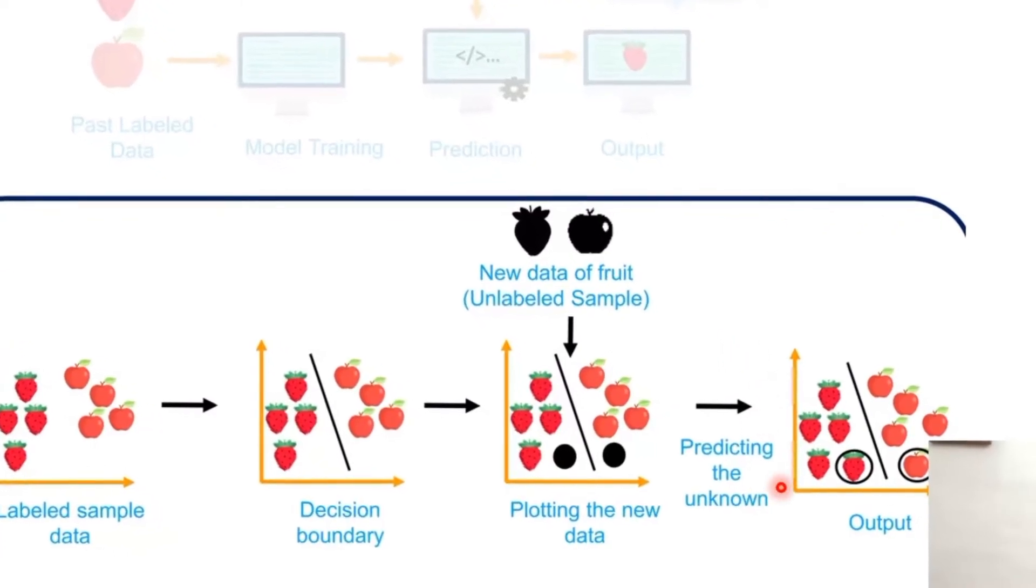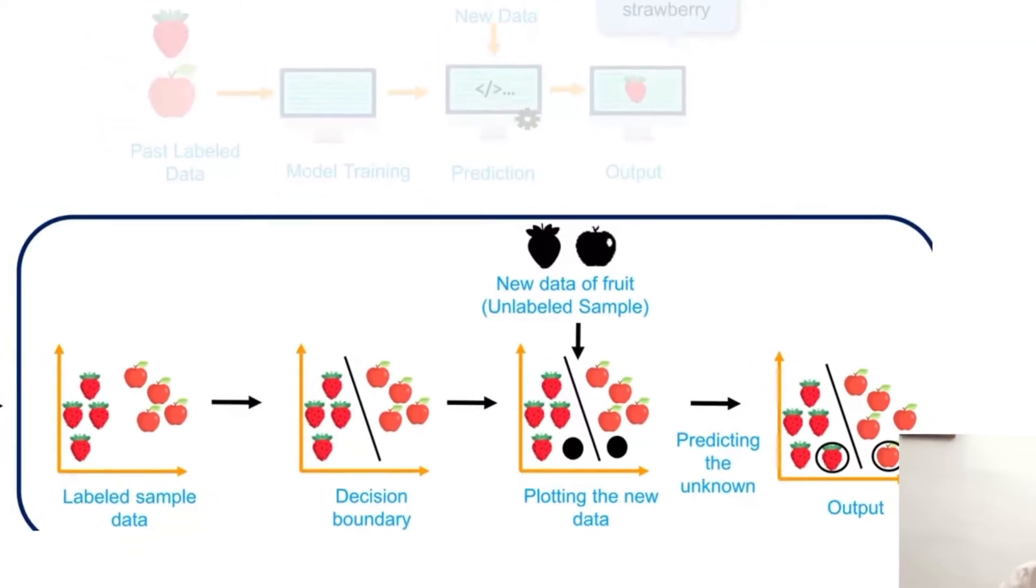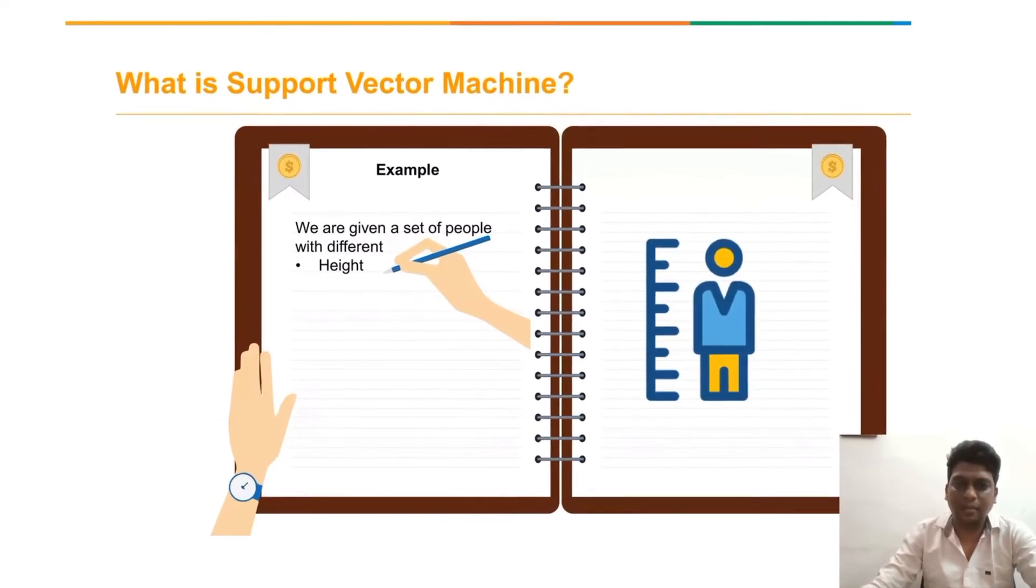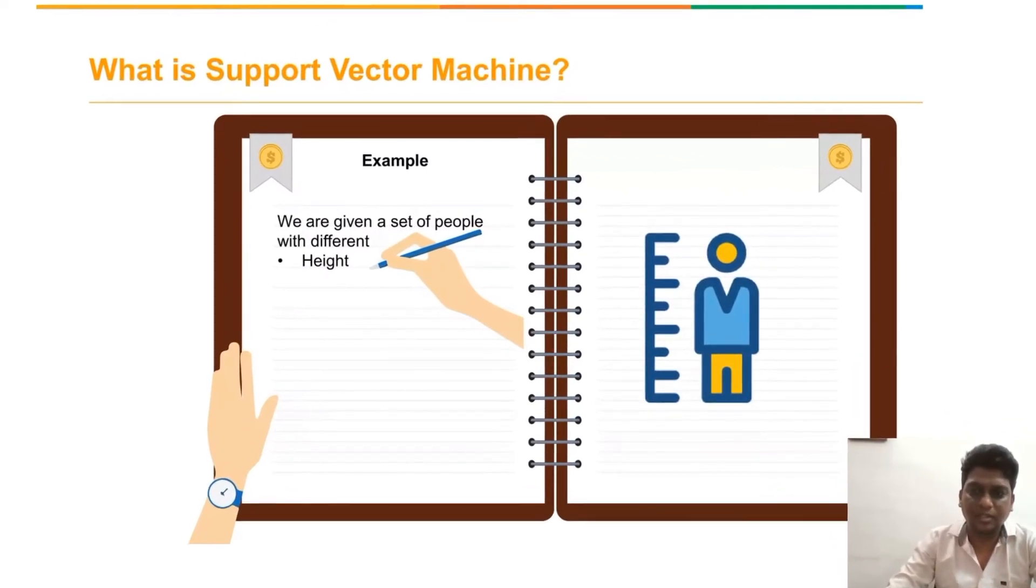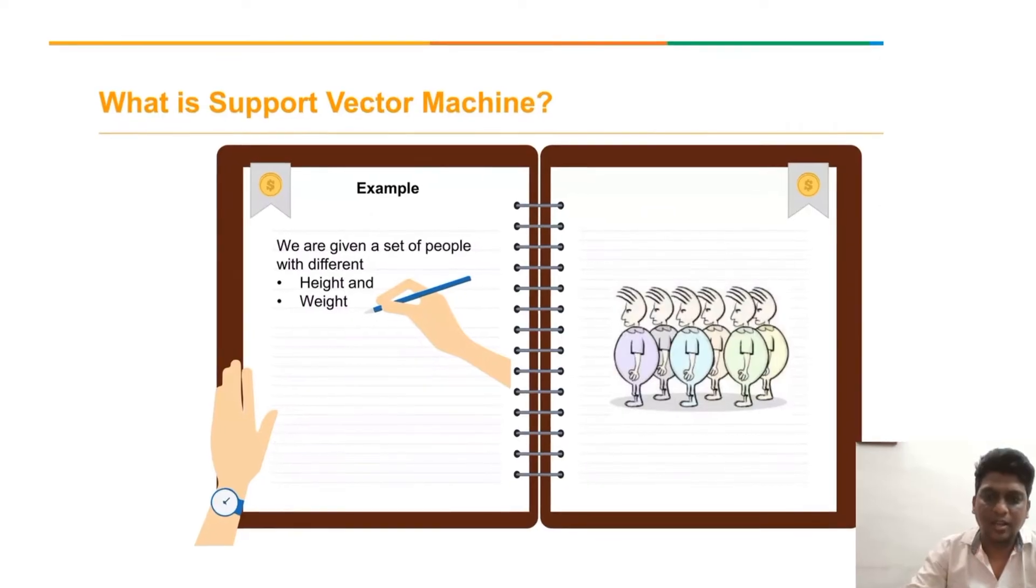It predicts the unknown data. Here we consider another example with a set of people with different heights, different weights, and different genders.